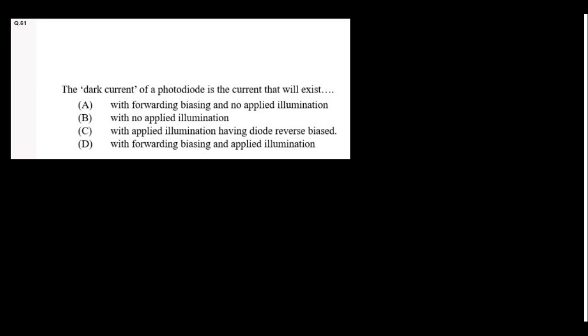The dark current of a photodiode is the current that exists with the diode reverse biased and with applied illumination. The photodiode is used in reverse biased condition with light present. Option C is the right answer.